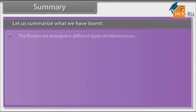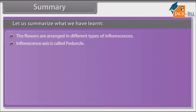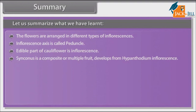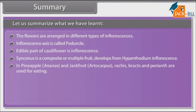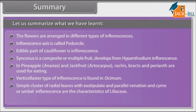Let us summarize what we have learned. The flowers are arranged in different types of inflorescences. The inflorescence axis is called peduncle. The edible part of cauliflower is inflorescence. Syncarp is a composite or multiple fruit that develops from hypanthodium inflorescence. In pineapple (Ananas) and jackfruit (Artocarpus), rachis, bracts and perianth are used for eating. Verticillaster type of inflorescence is found in Ocimum. Simple cluster of radical leaves with exstipulate and parallel venation and cyme or umbel inflorescence are the characteristics of Liliaceae. In family Graminae, inflorescence is spikelet.